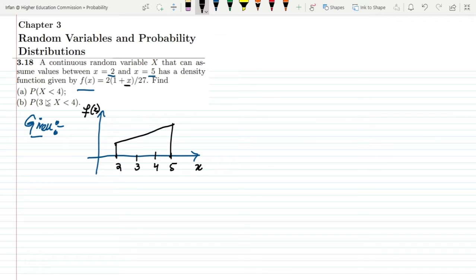Now here, in order to find different values which are here, let me solve it. We have to find in part (a) the probability that x is less than 4.